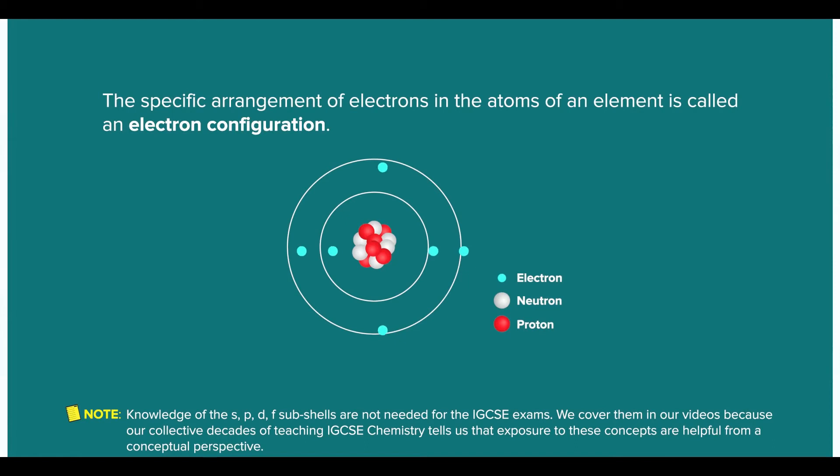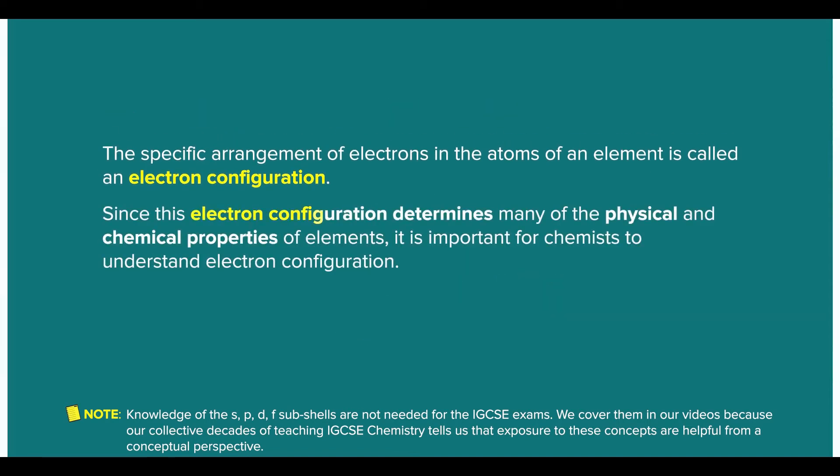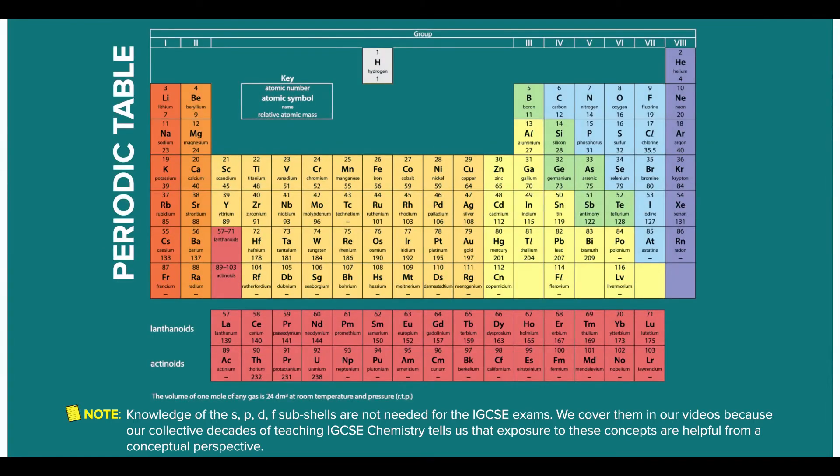So, the specific arrangement of electrons in the atoms of an element is called an electron configuration. Since this electron configuration determines many of the physical and chemical properties of elements, it is important for chemists to understand electron configuration. In order to understand electron configuration, let's take a look at the periodic table. The periodic table can be divided into S, P,